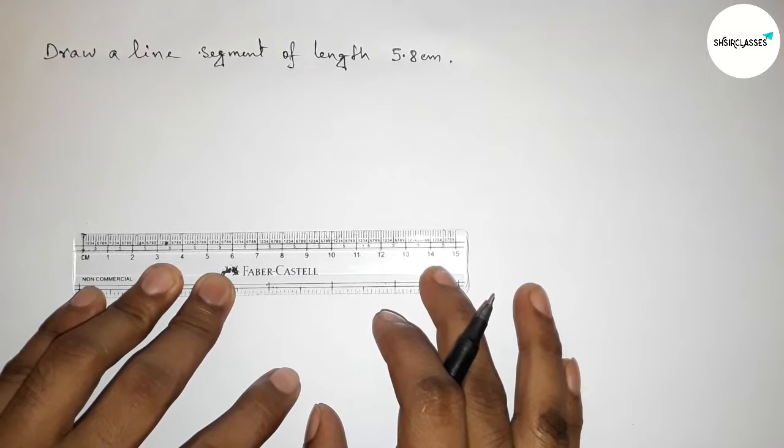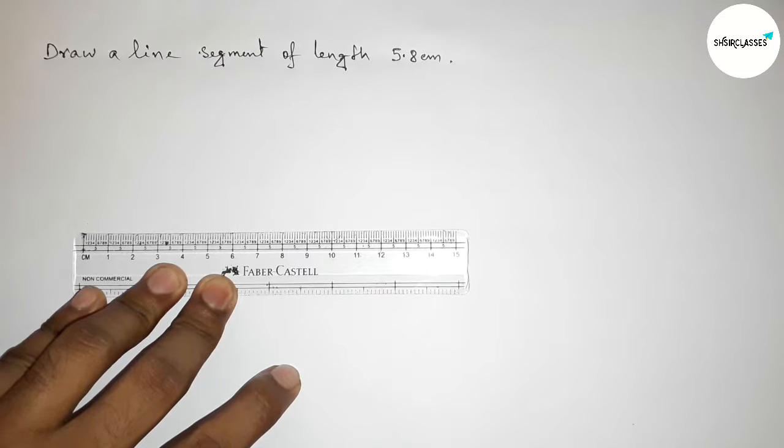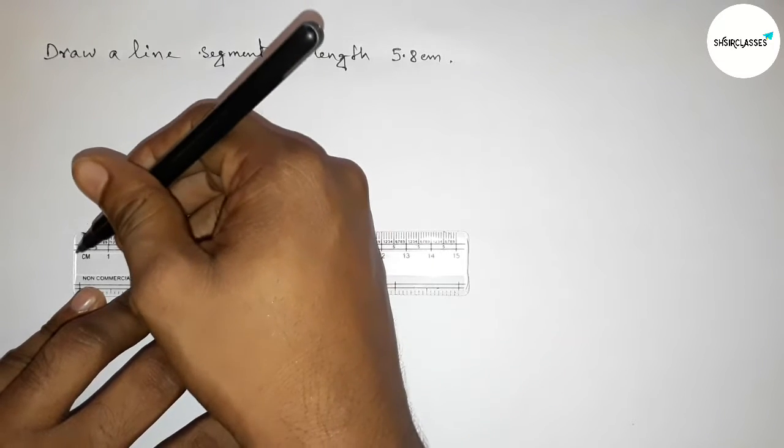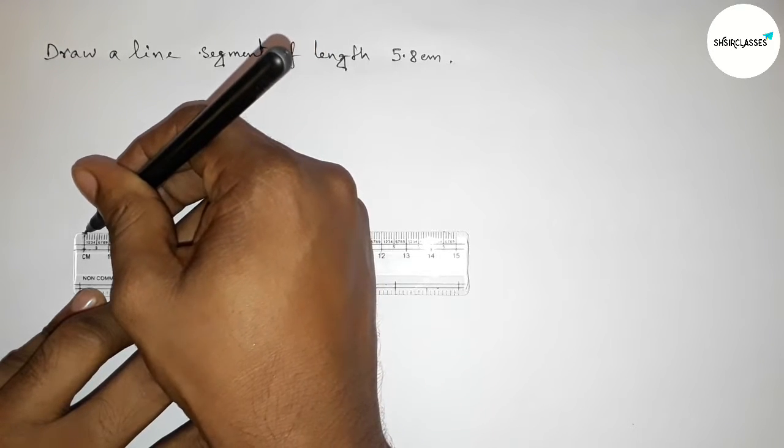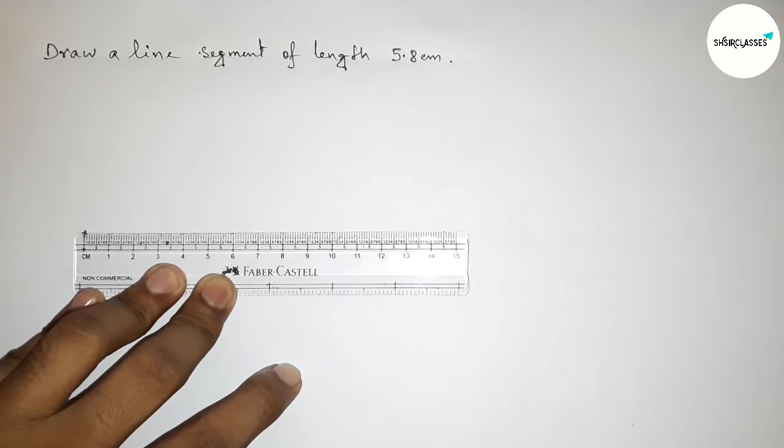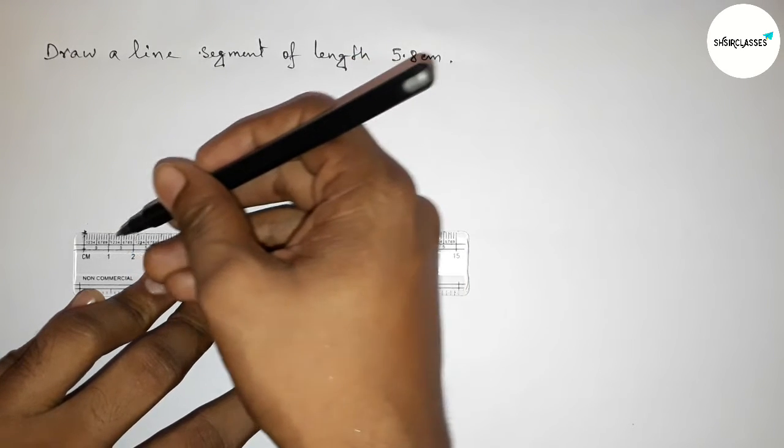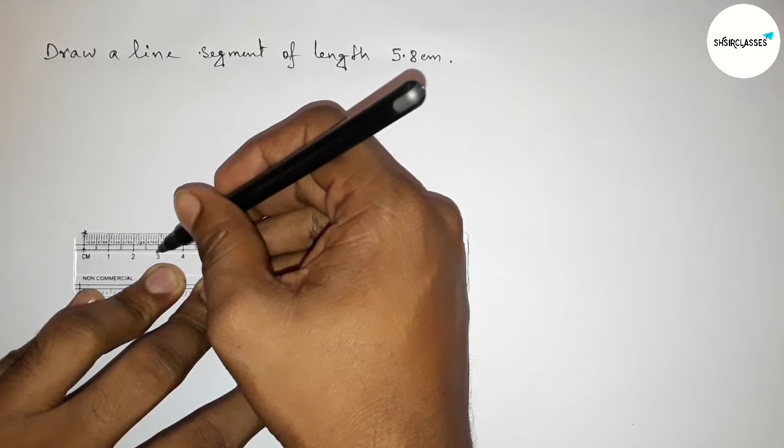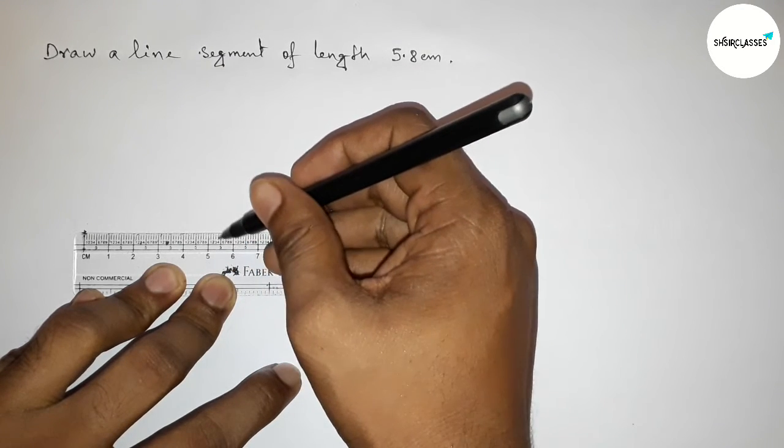Here this is the starting number zero. So first marking here the starting zero centimeter here, then counting this. So this is one centimeter, two centimeter, three centimeter, four centimeter, five centimeter.